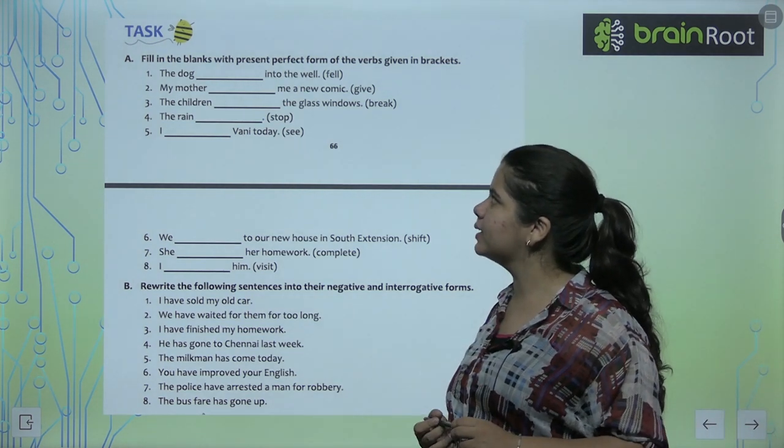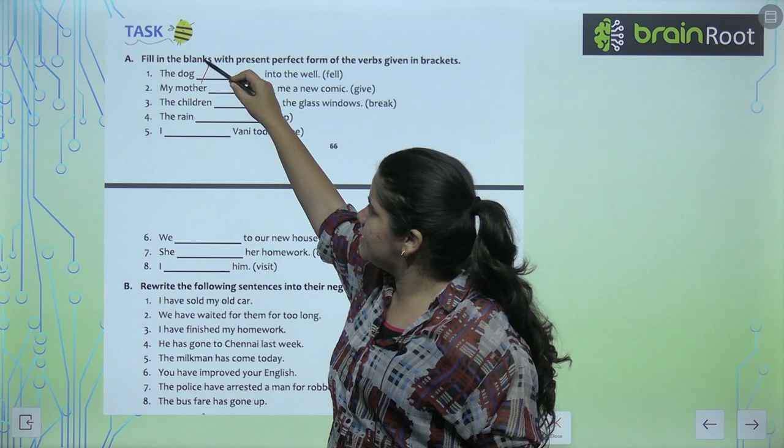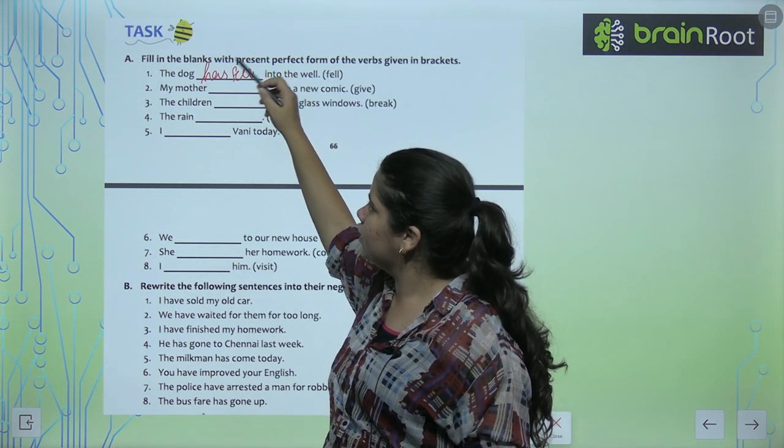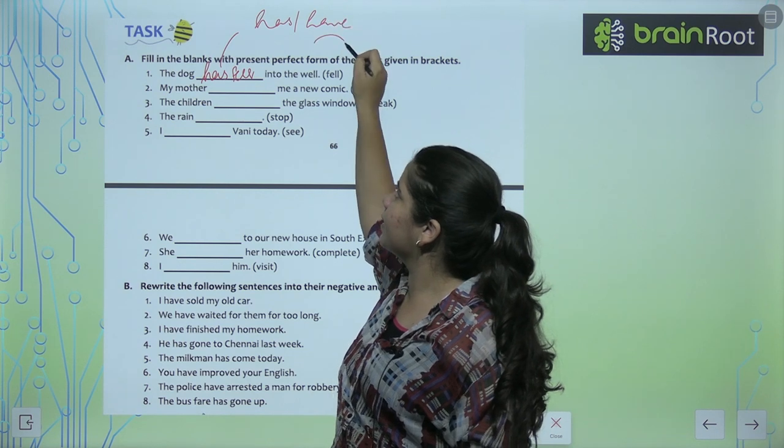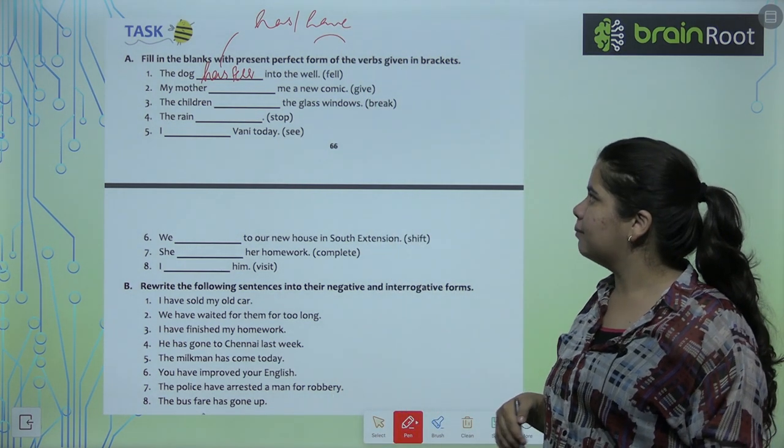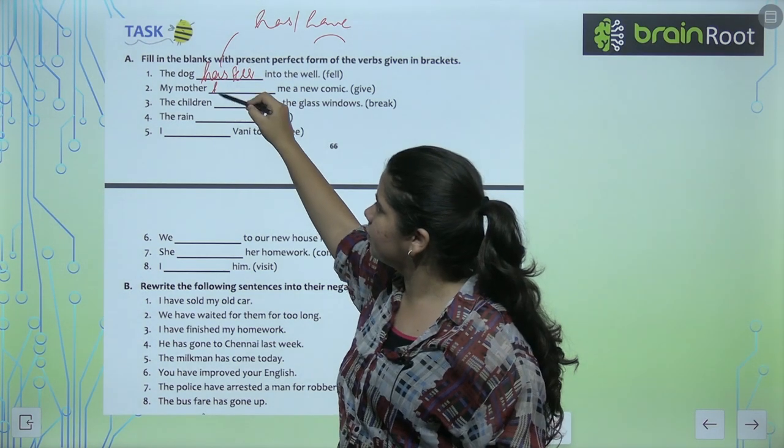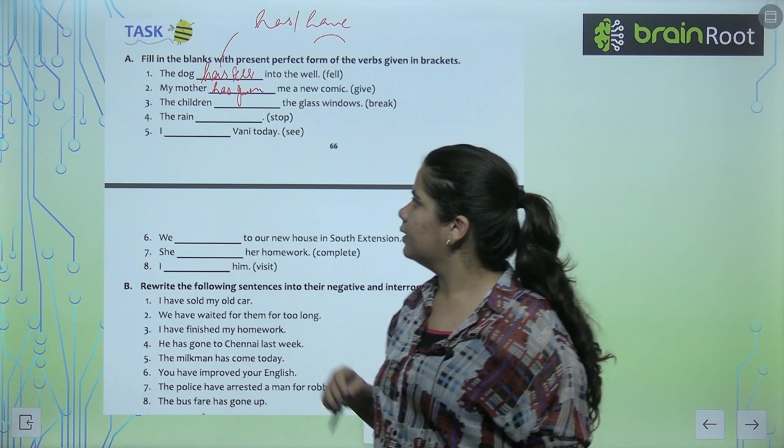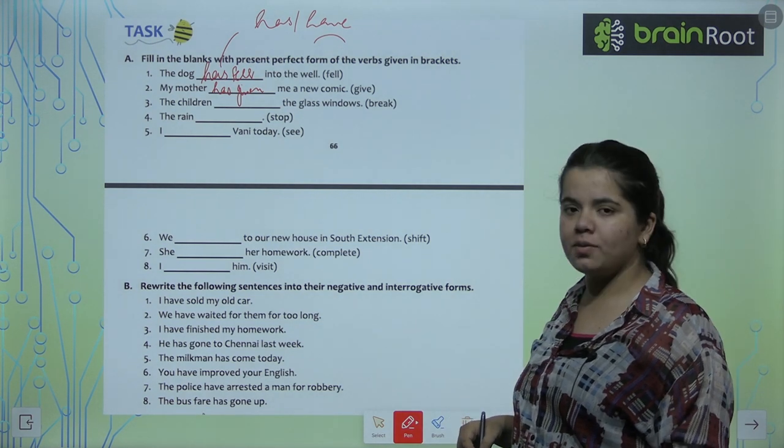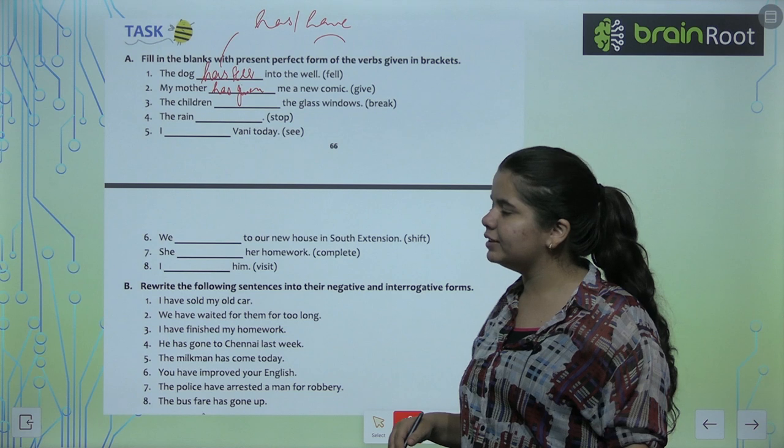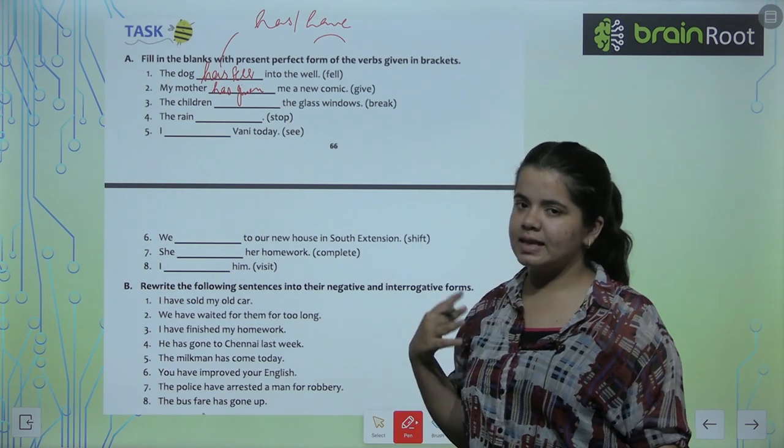Now, the first exercise is fill in the blanks with present perfect form. The dog dash into the well. The dog has fell into the well. So, has for present and fell to past. So our present perfect form symbolize has. My mother dash a new comic. My mother has given me a new comic. Has given. The children have broke the glass windows. The rain has stopped. I dash see Vani today. I have seen Vani today.